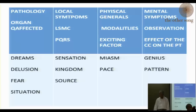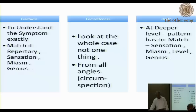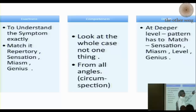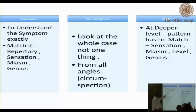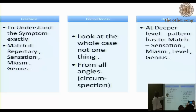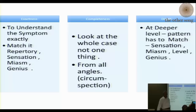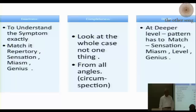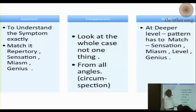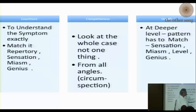The three main things about case taking are these words: exactness, completeness and depth. Exactness means to understand every symptom or sensation or experience exactly — not superficially, but exactly, in all its detail. Completeness means to look at all the angles, all the windows. And depth means to see the pattern that connects all of these aspects.